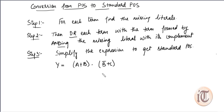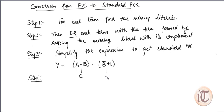We have to convert it into standard POS form by following this procedure. Step one is to find the missing literal in each term. In the first term (A + B), C is missing. In the second term (B̄ + C), C is missing — wait — here A is missing. So these are the missing literals.